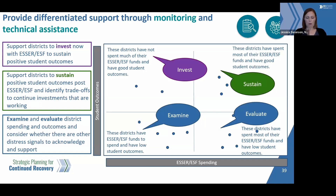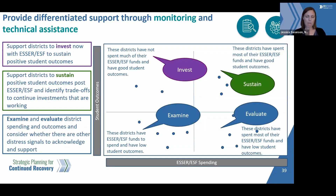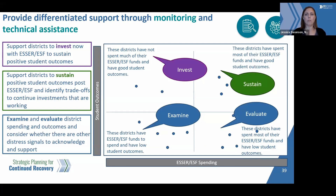For instance, if you are an LEA that has spent most of the money, you might be receptive to support around trade-off or prioritization discussions. And if it's an LEA that has not spent very much money, it might be a good candidate to support with thinking about continuing spending and advice on that. So a good strategy is to plot those LEAs by spending and by outcomes, or schools or regions if you're a unitary system.